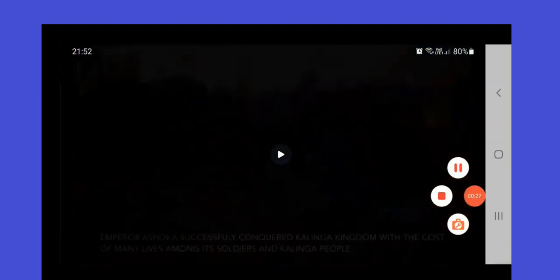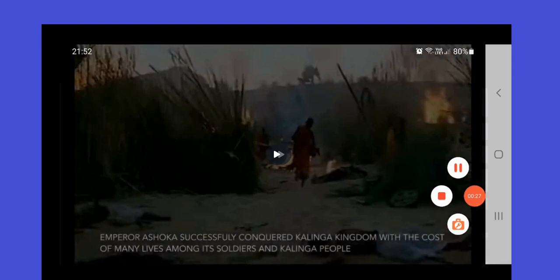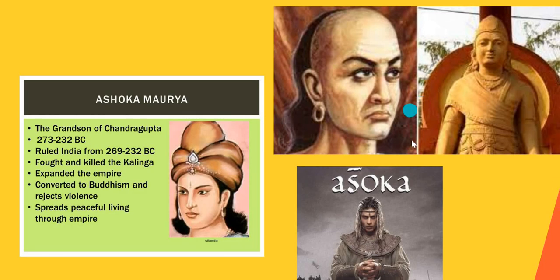Ni Asoka - ada film ni, Asoka, Shah Rukh Khan berlakon. Kalau nak tengok bagaimana pemerintahan Asoka dan Perang Kalinga, boleh tengok film ni. Cuba cari tapi tak jumpa dalam YouTube, mungkin boleh tengok di Netflix kalau ada. Ini dari segi Maurya - Chandra Gupta Maurya adalah atuk dia, dan Asoka 'The Grandson of Chandra Gupta' ruled India from 269 to 232 BC, fought and won the Kalinga War, expanded the empire, converted to Buddhism and rejected violence, spread peaceful living through his empire.